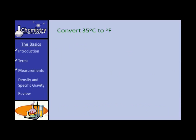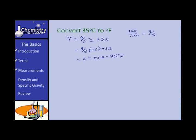Here's a straightforward problem: convert 35 degrees Celsius to degrees Fahrenheit. Remember the formula: degrees Fahrenheit equals 9/5 times degrees Celsius plus 32. The 9/5 comes from 180 over 100 reduced to 9/5, and the 32 comes from where the scales start — Celsius starts at 0, Fahrenheit starts at 32. So: degrees Fahrenheit equals 9/5 times 35 plus 32. 5 goes into 35 seven times; 7 times 9 is 63; 63 plus 32 is 95 degrees Fahrenheit.